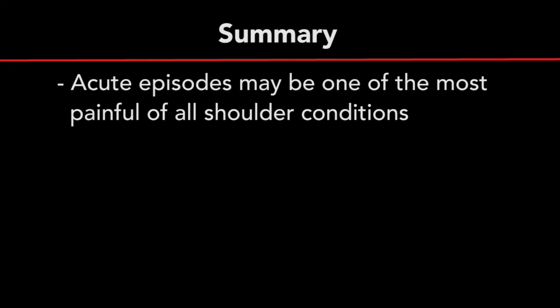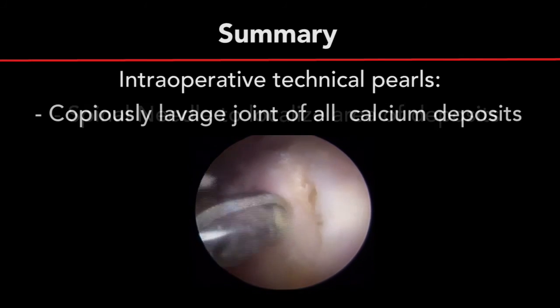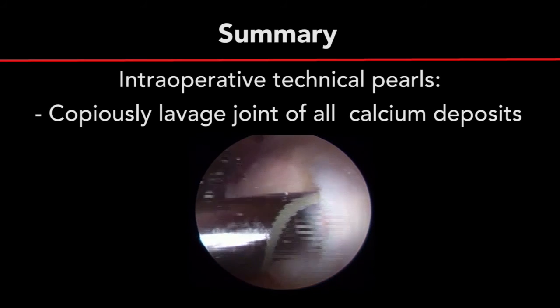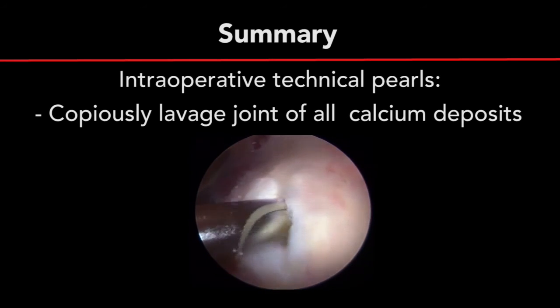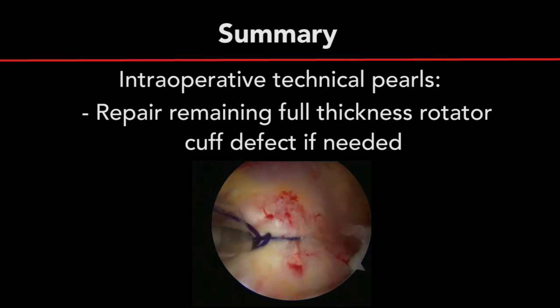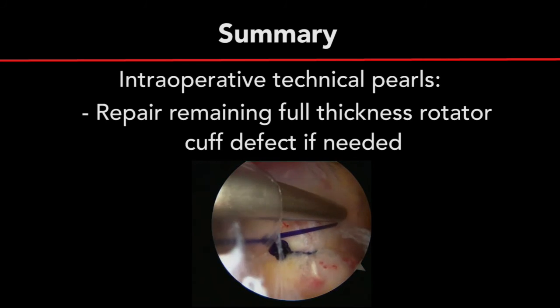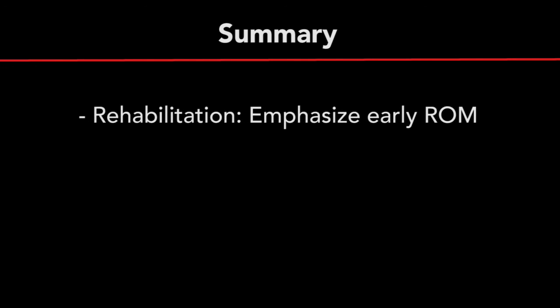In summary, acute episodes of calcific tendinitis may be one of the most painful of all shoulder conditions. Intraoperative technical pointers include the use of a spinal needle to localize the area of calcification. It is important to copiously lavage the joint of all calcium deposits, as leaving calcium in the joint increases the risk of post-operative stiffness and adhesive capsulitis. If a full-thickness rotator cuff tear is created, this should be repaired using the surgeon's discretion for optimal repair technique. Post-operatively, an emphasis should be placed on early range of motion to prevent stiffness, one of the most common complications following arthroscopic treatment of calcific tendinitis.